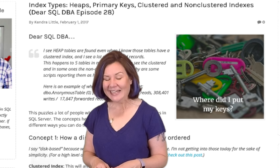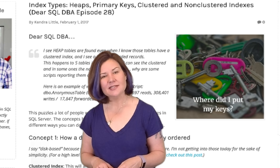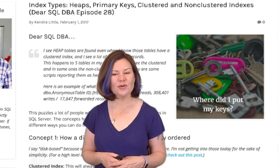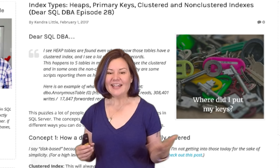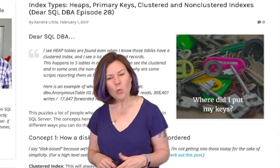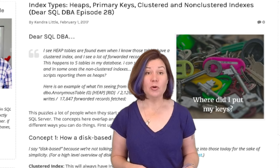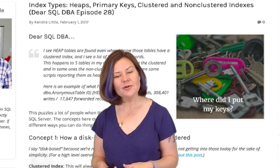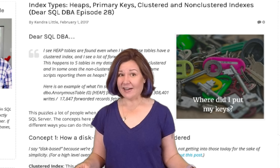Dear SQL DBA, I see that heap tables are found in my database even when I know that those tables have a clustered index, but I see a lot of forwarded records on them. This happens to five tables in my database, and I can see the clustered indexes and in some cases the non-clustered indexes on the tables. Why are some scripts reporting them as heaps? Then they sent me sample output showing the tables had index ID 0 and a bunch of forwarded records. This is something that puzzles a lot of people, and I've actually found this issue when looking at a lot of databases.